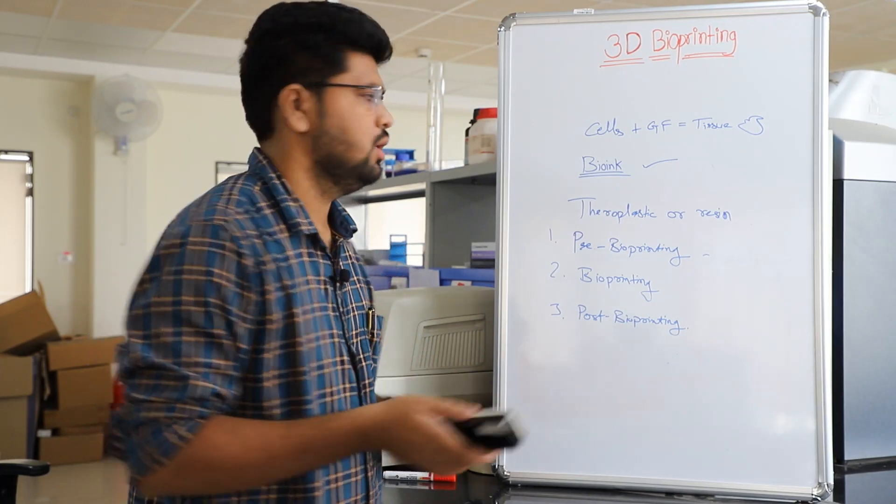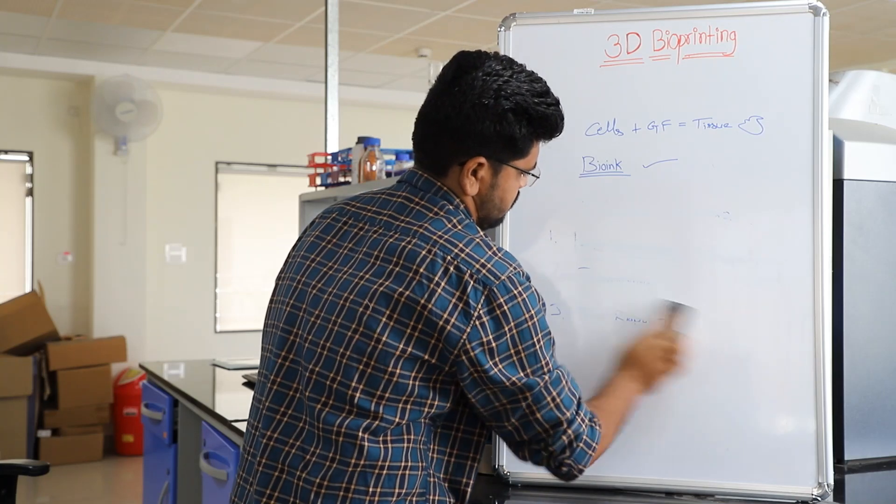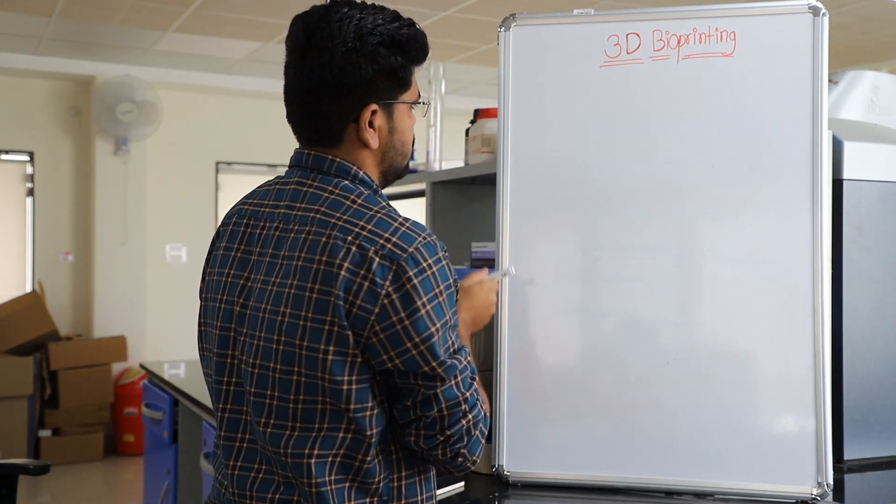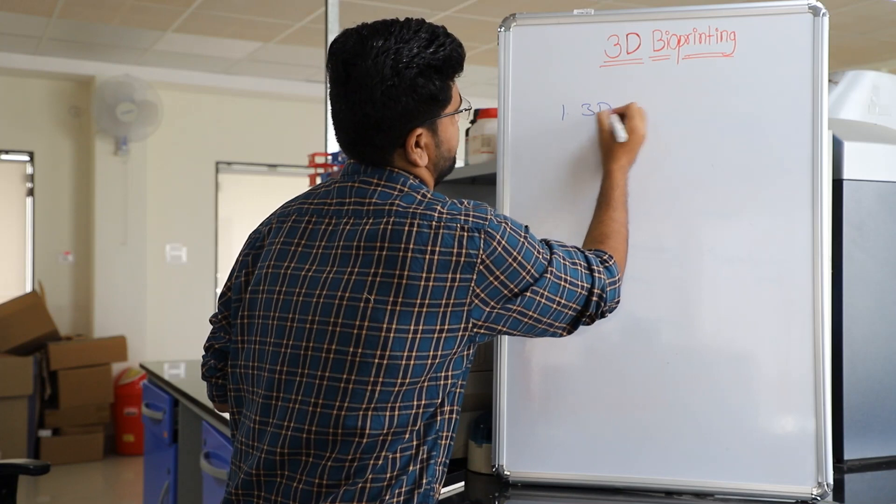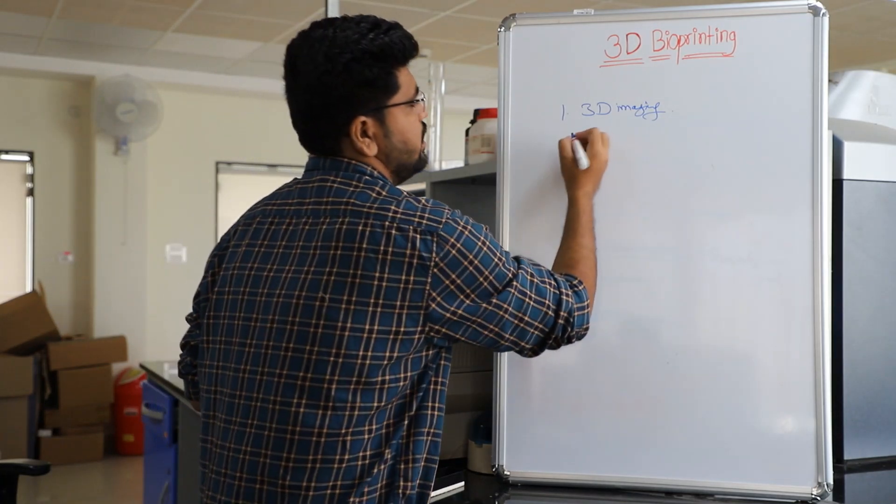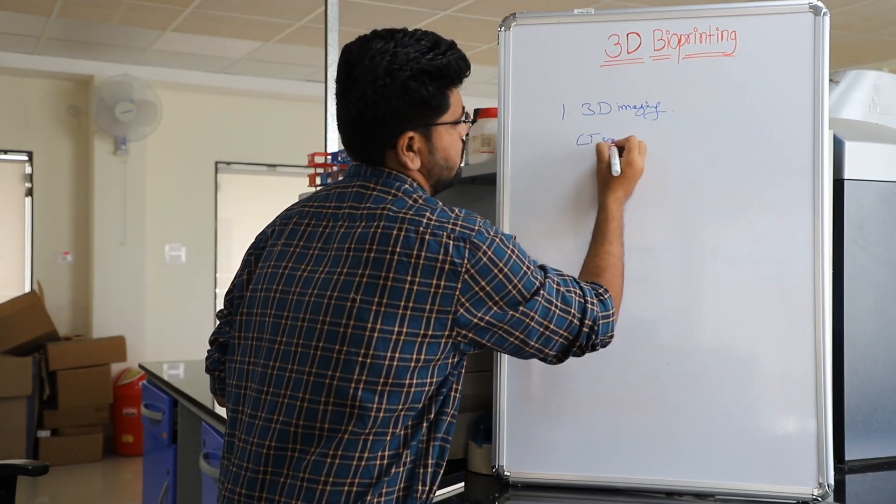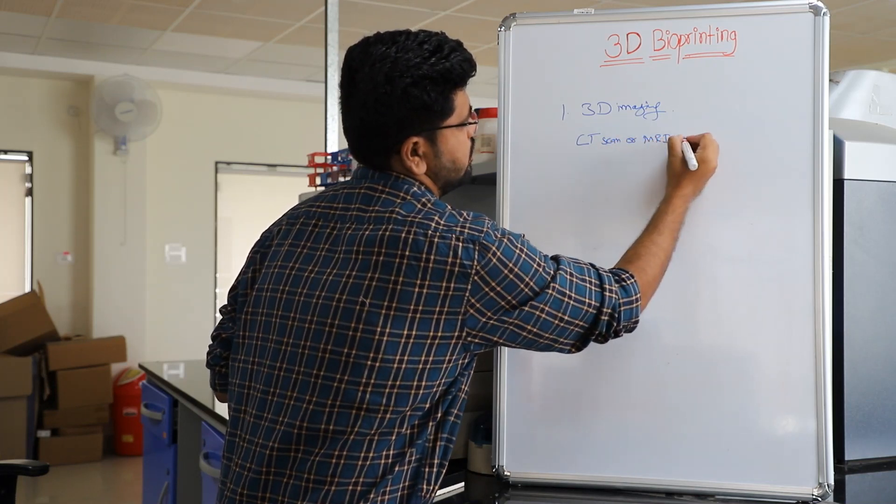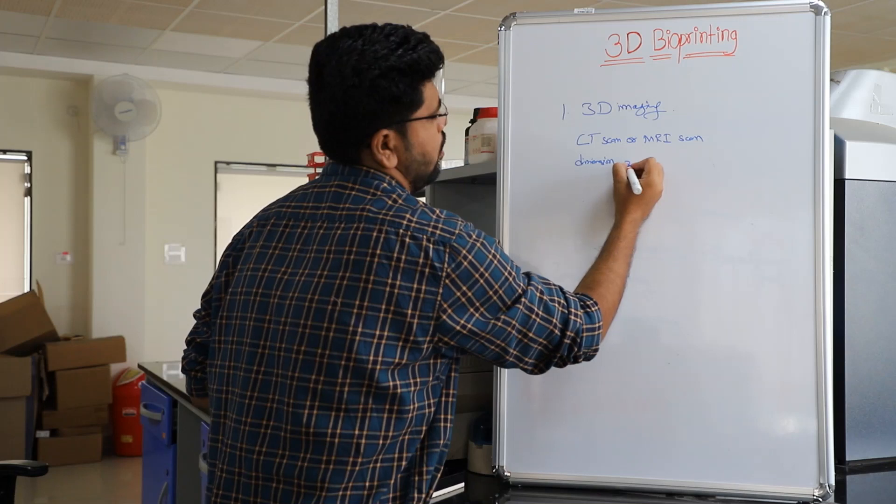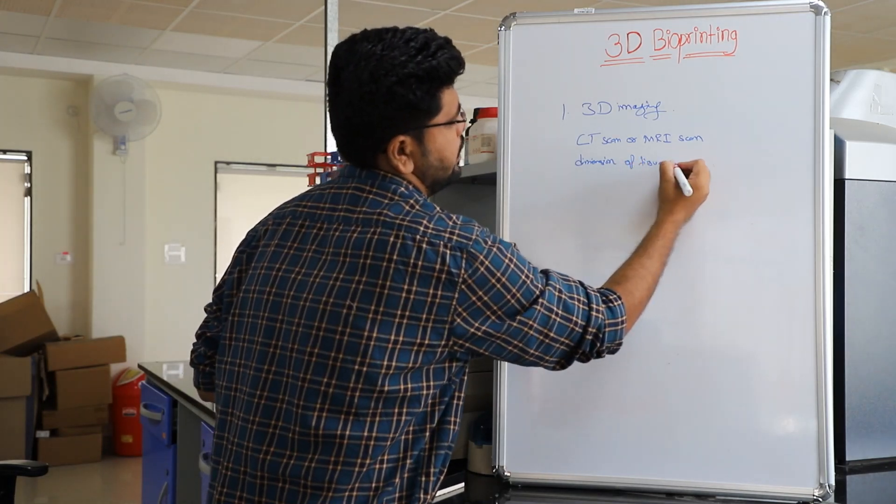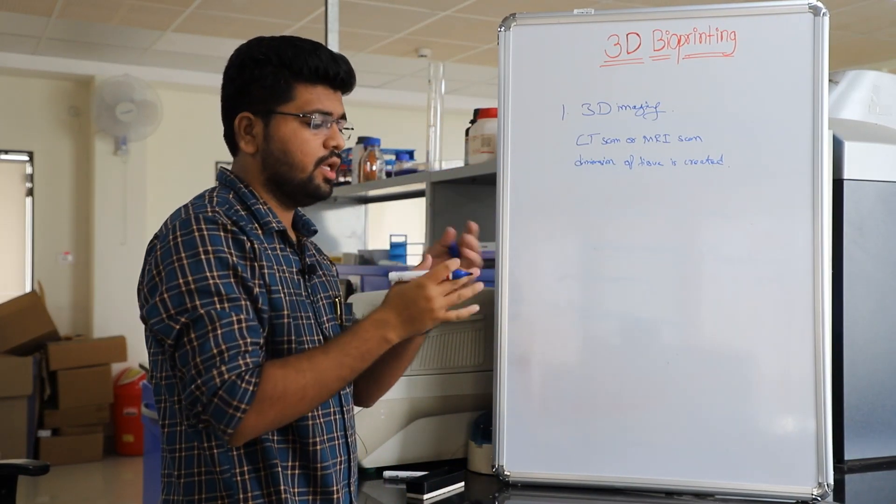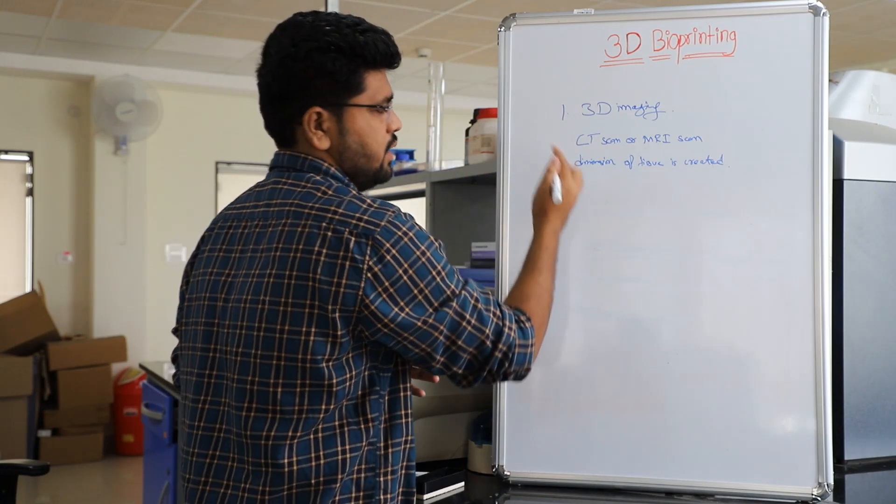How does 3D bioprinting work? We will see it step by step. Our first step is 3D imaging. Now what happens in 3D imaging? With the help of CT scan or MRI scan, the actual dimensions of tissue structures are created in our first step, 3D imaging.